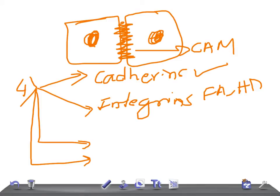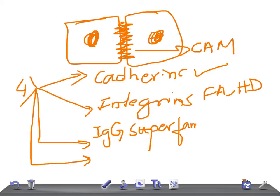And then we have the IgG superfamily, which forms the cell adhesion molecules in the CNS — the central nervous system.